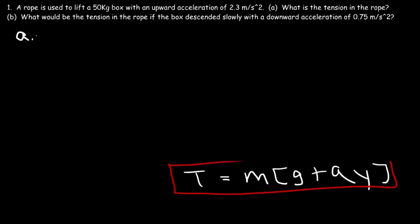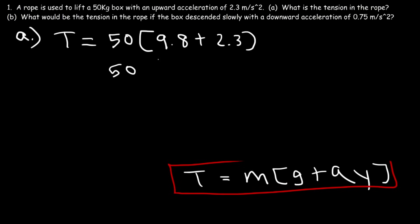Let's get the answer for Part A. The tension force equals the mass of 50 kilograms times the gravitational acceleration plus the upward acceleration of 2.3 meters per second squared. So 2.3 plus 9.8 is 12.1. Multiplying by 50, the tension force is 605 newtons.